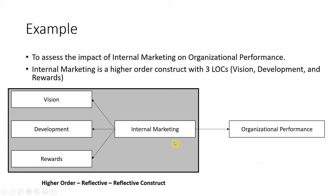For our first example, I have taken a very basic model where I have a reflective-reflective higher-order model and a lower-order construct. The reflective-reflective higher-order construct, internal marketing, affects organizational performance. This gray block here is internal marketing — that is your second-order reflective construct — with vision, development, and rewards as the lower-order constructs. All three sub-dimensions are measured reflectively, and internal marketing is also measured reflectively using vision, development, and rewards. So this is a reflective-reflective higher-order construct.